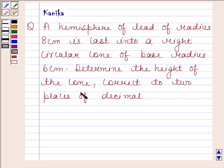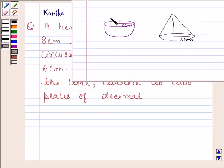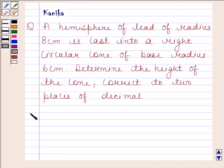Determine the height of the cone, correct to two places of decimal. Now this is the hemisphere whose radius is 8 centimeters. This is cast into a right circular cone of base radius 6 centimeters. We have to find the height of the cone. Let's now begin with the solution.